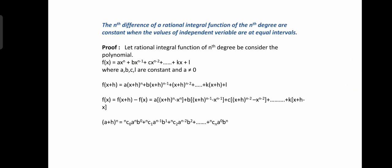Now the proof. Let a rational integral function of the nth degree be considered as a polynomial. Let f(x) be a polynomial of degree n in x given by f(x) = a·x^n + b·x^(n-1) + c·x^(n-2) + ... + k·x + l, where a, b, c, ..., l are constants and a ≠ 0.